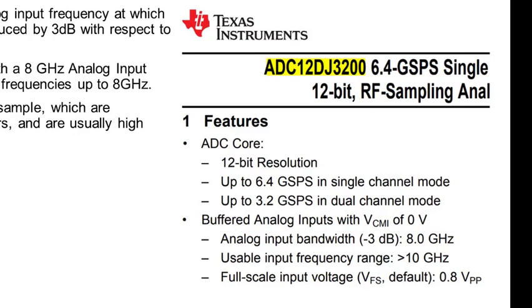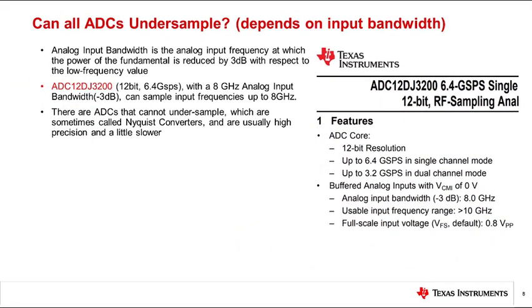One such device is ADC12DJ3200. It is a 12-bit ADC and can sample up to 6.4 Giga samples per second in single channel mode and up to 3.2 Giga samples per second in dual channel mode. It has 8 Gigahertz of analog input bandwidth which means it can sample signals in 1st, 2nd, 3rd and 4th Nyquist zones.